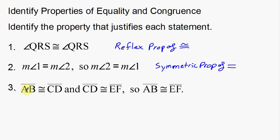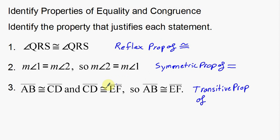Last example: segment AB is congruent to segment CD, and segment CD is congruent to segment EF, so AB is congruent to EF. We just went over this — it's the transitive property. We're talking about shapes and using congruency symbols, so this is the transitive property of congruence. Examples one and three were congruency statements, and number two was an equality statement. Those are the congruency properties.